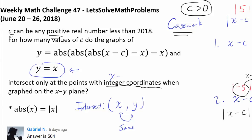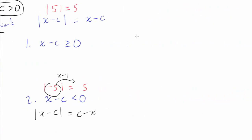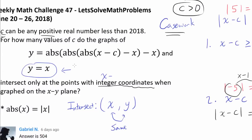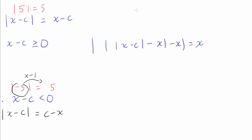So we don't need to look at points with integer x and y coordinates separately — we just need integer x coordinates, since x and y are equal at intersections. We are looking at the equation: the absolute value of the absolute value of the absolute value of x minus c, minus x, minus x, set equal to x, and we need to find for what integer values of x this equation holds.